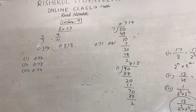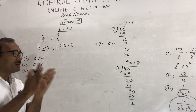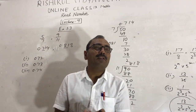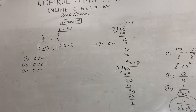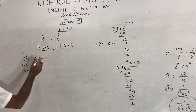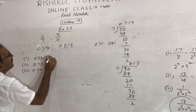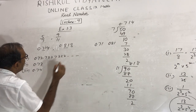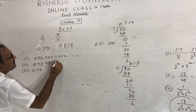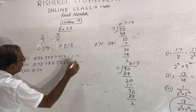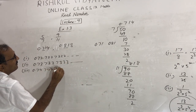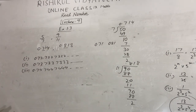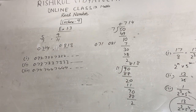You can construct them like this: 0.7272277222... (with increasing twos), 0.7373377333... (with increasing threes), and 0.7474477444... (with increasing fours) — up to so on. These are three irrational numbers that lie between 5/7 and 9/11. First convert to decimal form, identify the range between 0.714... and 0.818..., then construct non-terminating non-repeating decimals in between.